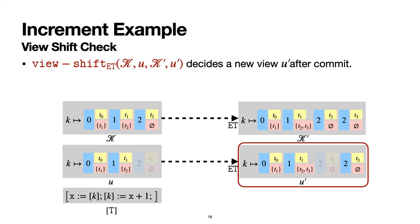However, we are not done yet. We still need to decide a new view for the client. Note that this new view will affect future transactions. It is done through a view-shift predicate, also parameterized by execution test ET. For example, the predicate here says the new view u' must contain all versions included in the old view u and any new versions written by the transaction.